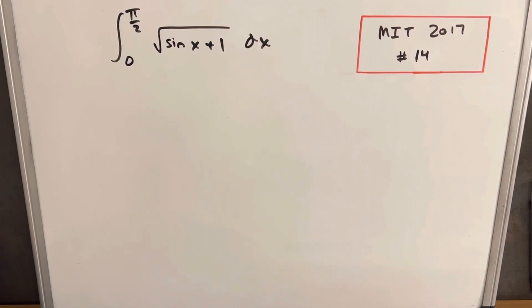We have an integral from pi over 2 to 0 of the square root of sine x plus 1 dx. It's interesting. We're used to integrating sine, cosine, but not usually inside of a square root. And there's quite a few different ways we could solve this.